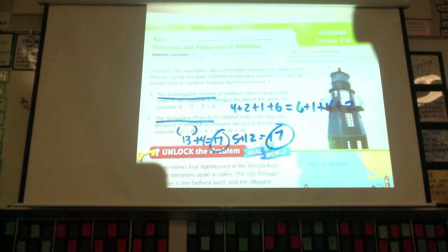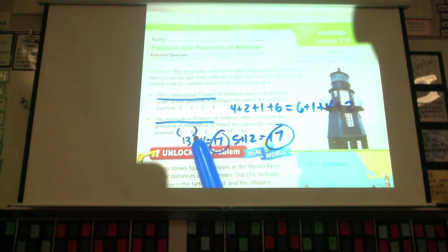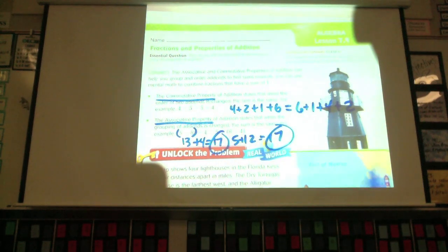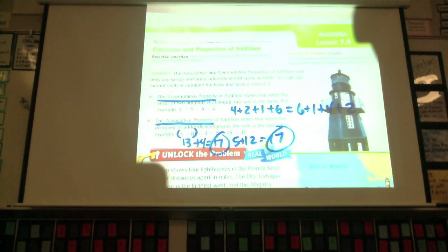Now these properties apply to addition. They don't apply to all functions of math. So if we're doing division and multiplication and we're combining subtraction and addition in there, it's going to be different rules. But when you're talking about straight up adding numbers, this works. That's why it's called the commutative property of addition and the associative property of addition. So when you're doing addition, these two properties work.